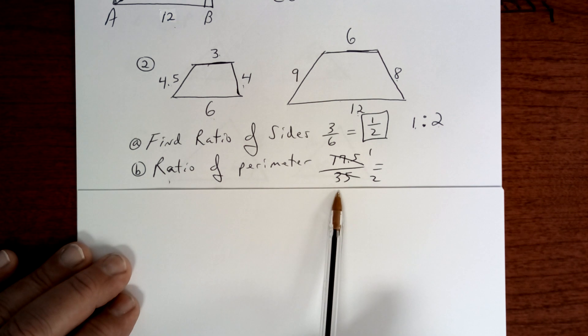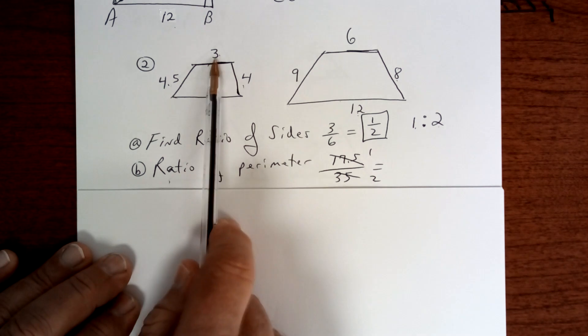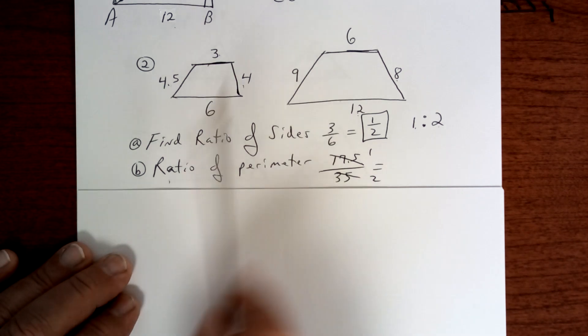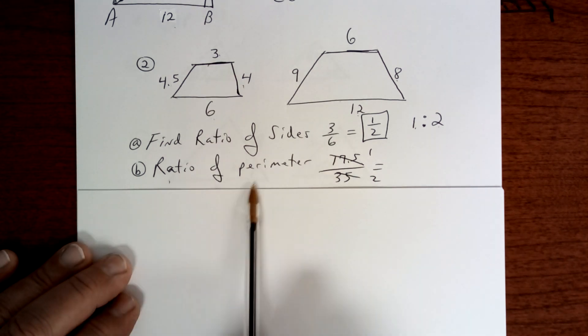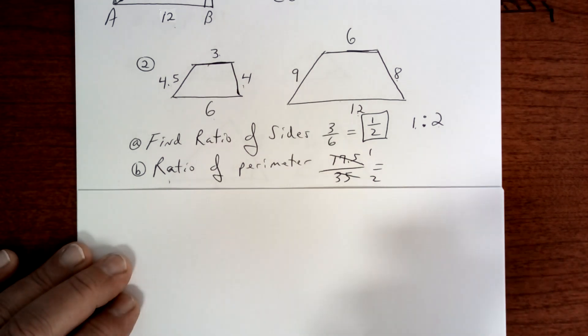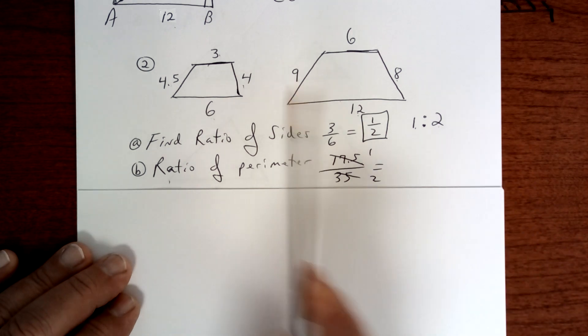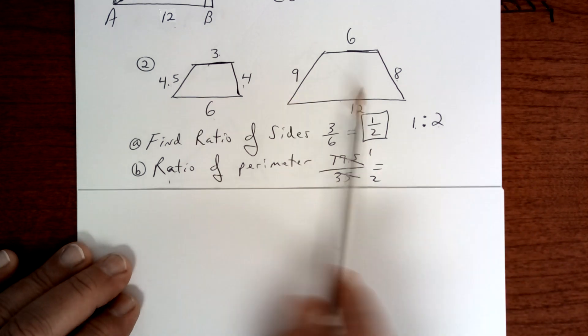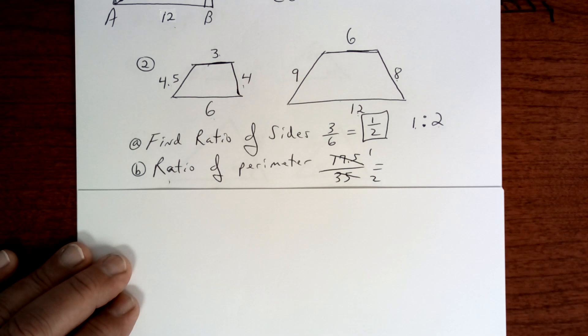When you think about it, the sides are first degree and perimeter is first degree, so they should be the same. Now if it was area, then you'd have to find the area of both of these, and you would need the height.